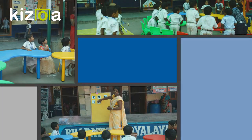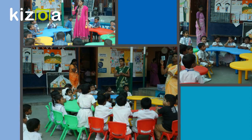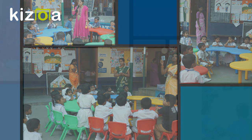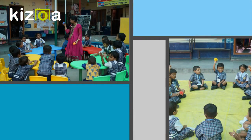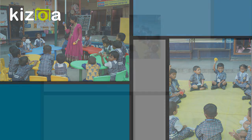I is for igloo, i-i-igloo. J is for juice, ju-ju-ju. K is for kangaroo, k-k-kangaroo. L is for lion, l-l-lion.